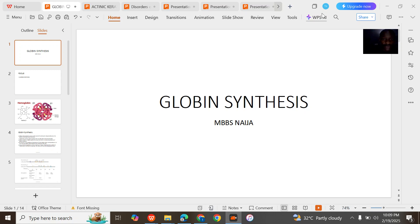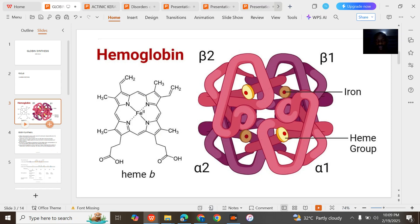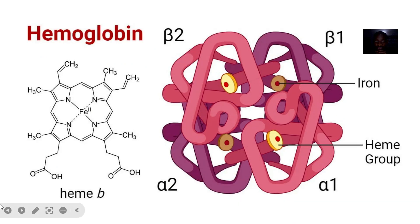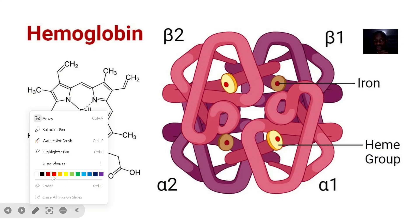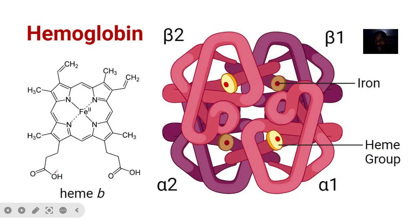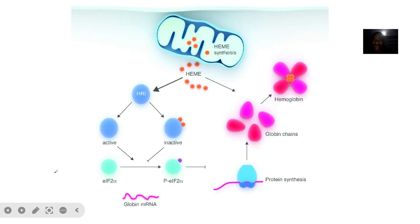We'll quickly look at globin synthesis. This whole concept of globin synthesis came when reading about synthesis of hemoglobin as a whole. Hemoglobin is made up of the heme component and the globin component. The heme component is synthesized separately, while the globin component is synthesized separately. We've already looked at the heme synthesis, which involves a whole lot of steps.